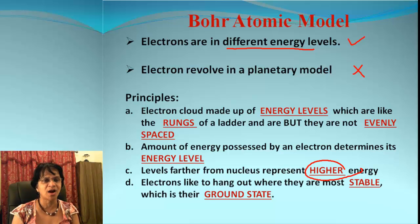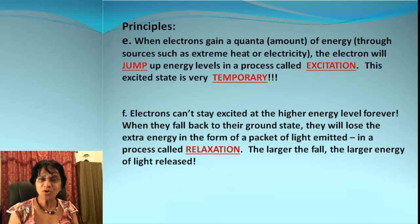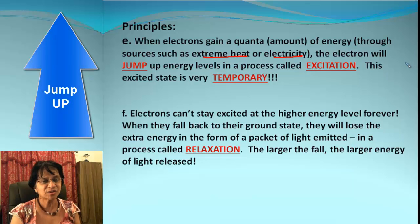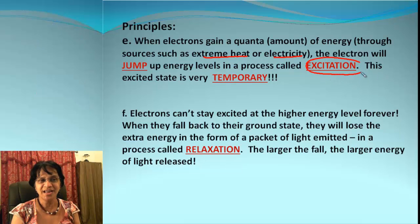The most important thing is that electrons like to hang out where they are more stable — that means at their ground state. Let's move on to more important principles. When electrons gain energy, through a process of heat or electricity, the electron will jump up an energy level, and that's called excitation. This is of course a temporary excited state.